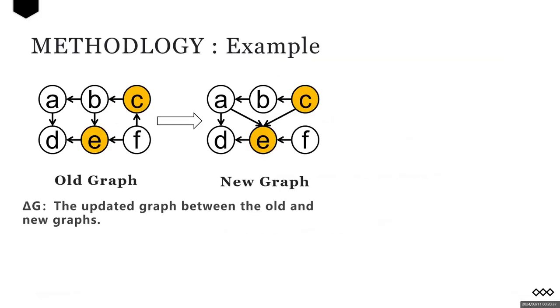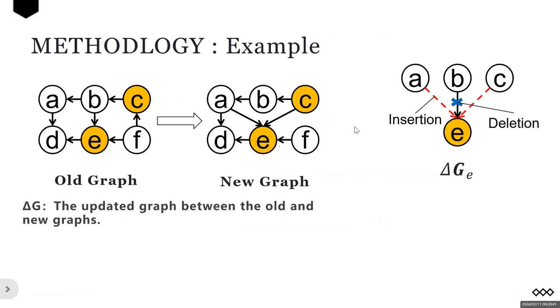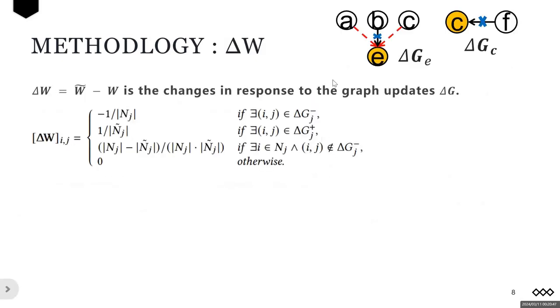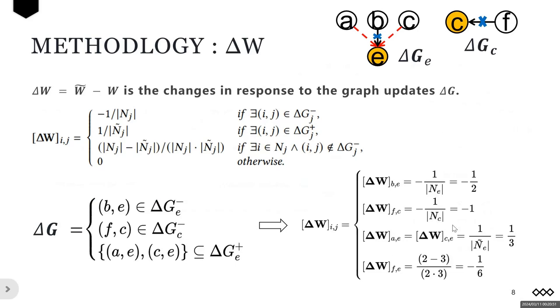To describe our method, we use a small example to evaluate the changes to the CoSimRank similarity. We propose the delta graph based on the endpoint of edge updates. Then based on the decomposition of delta G, we develop a new method to incrementally compute the changes to the transition matrix delta W.